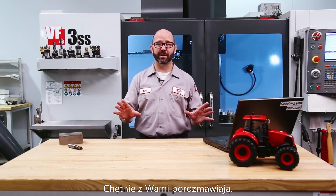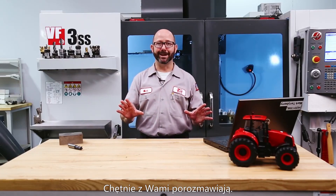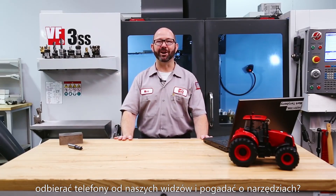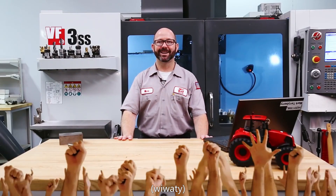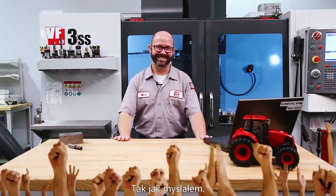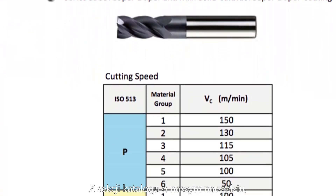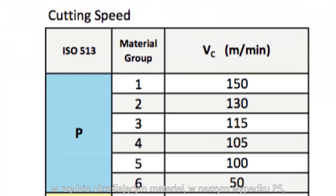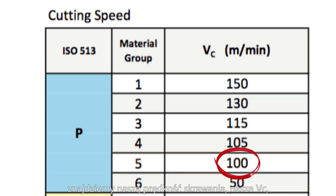They would love to hear from you. How many tooling reps out there would love to hear from one of our viewers and talk tools? Yeah, that's what I thought. From the section of the manual for our exact tool, under the row that lists our material group — P-5 in our case — we're gonna find our cutting speed, our VC, our meters per minute.